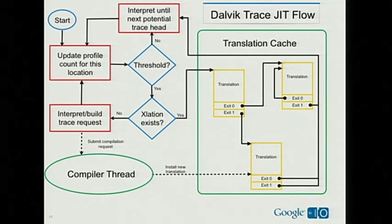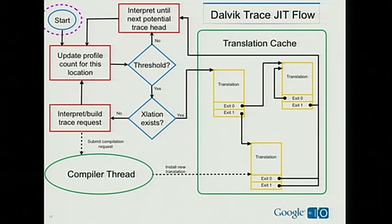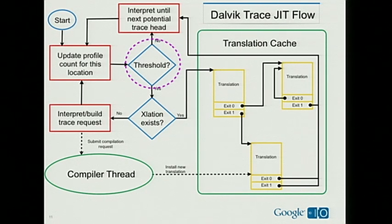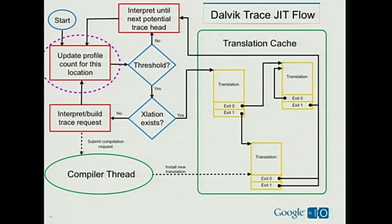Let's walk through a simplified version of how the trace JIT works. A trace is a string of instructions and has to have a start — we call the potential start of any trace the trace head, which is generally the target of a backward branch, the entry point to a method, or the target of an indirect branch. When the interpreter reaches a potential trace head, it increments a profile counter associated with that point and asks: have I been here enough that this matters? Initially the answer is no, so the interpreter goes back to interpreting as fast as it can until the next potential trace head, updates its profile counter, and asks again. Eventually the answer comes back yes — this is interesting, I've been here enough.